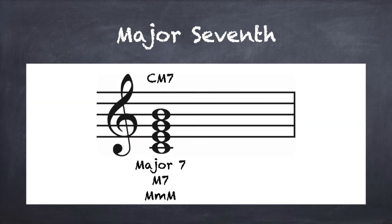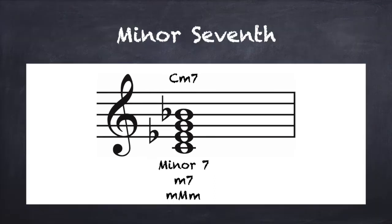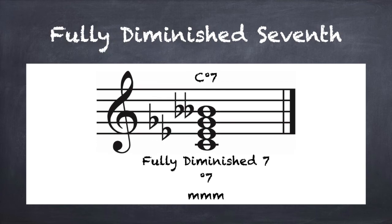In chord one, we have a major seven chord. C to E is a major third, E to G is a minor third, G to B is a major third. So the thirds from bottom up are major, minor, major. The second chord is a major minor seven chord, and it's major, minor, minor. The minor seven chord is minor, major, minor. The half diminished seven chord is minor, minor, major. And the fully diminished seven chord is minor, minor, minor.